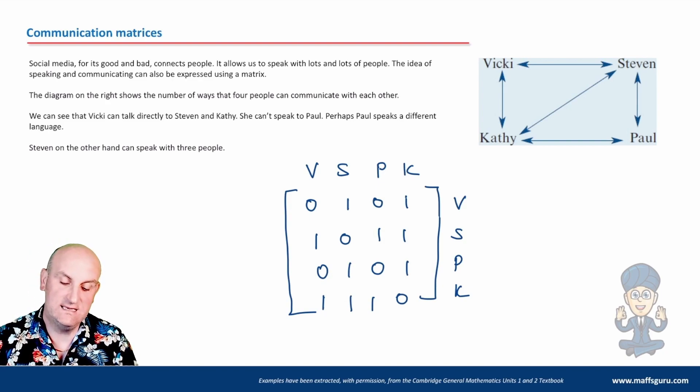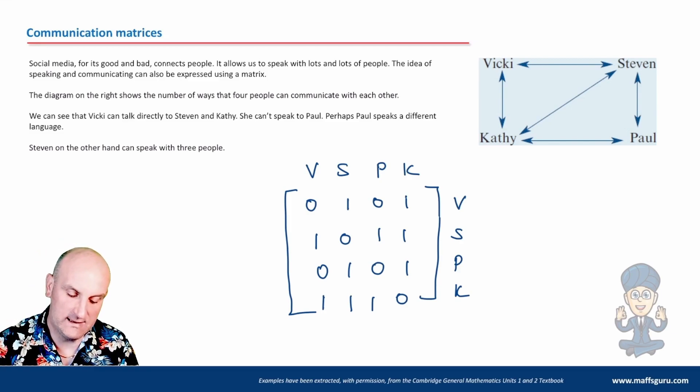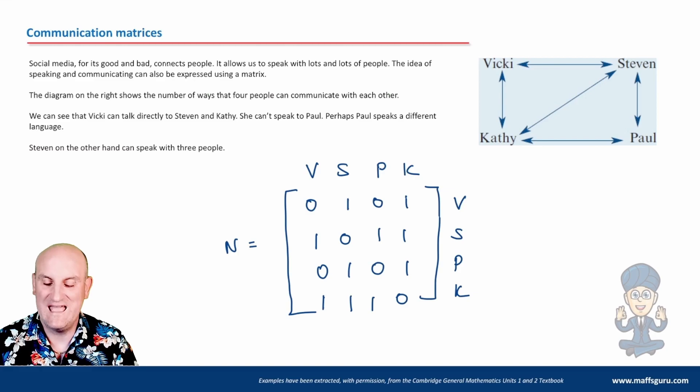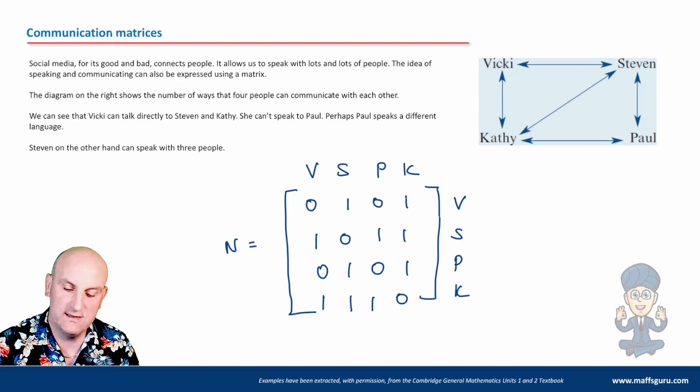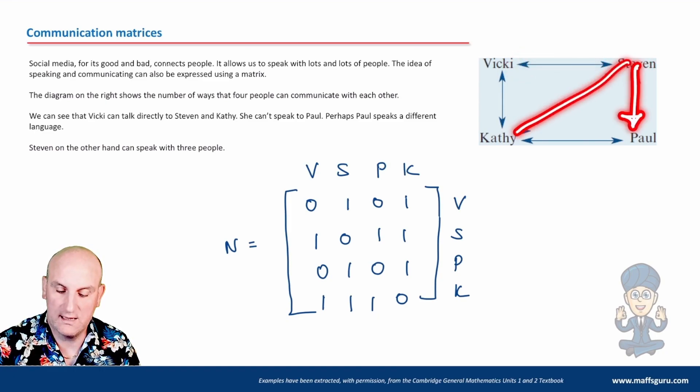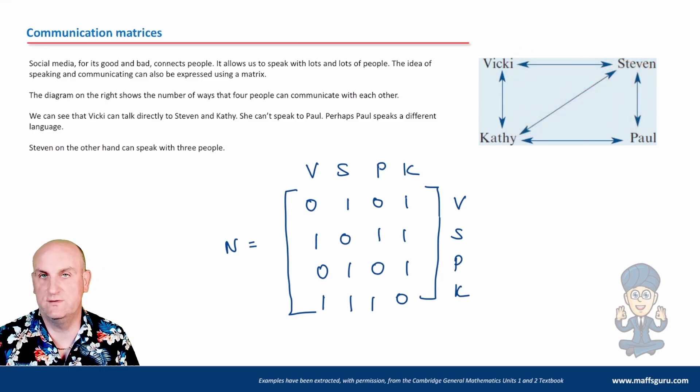Now that is, believe it or not, called a one-step communication matrix. And in that situation, we're going to call it M. Now what it means is a one-step communication matrix is I can have one person talk directly to one other person. So in that situation, Stephen can talk directly to Vicky. Stephen can talk directly to Paul. Kathy directly to Stephen as well.